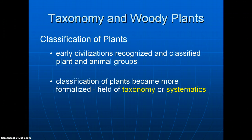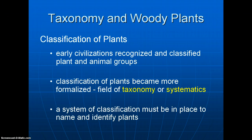As time went on, the classification of plants became more formalized so that the field of taxonomy, or sometimes known as systematics, was born. Things have become much more formalized since then. There is a need for a system of classification of plants and animals in order for us to be able to name and identify them — otherwise it's just rather random and haphazard.